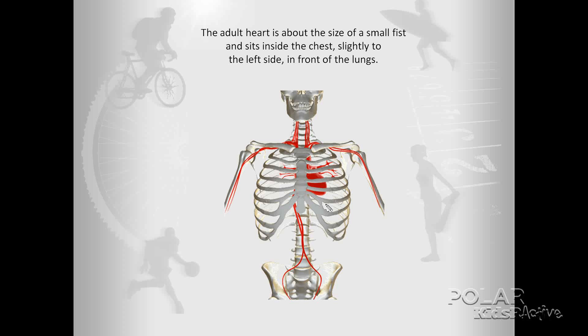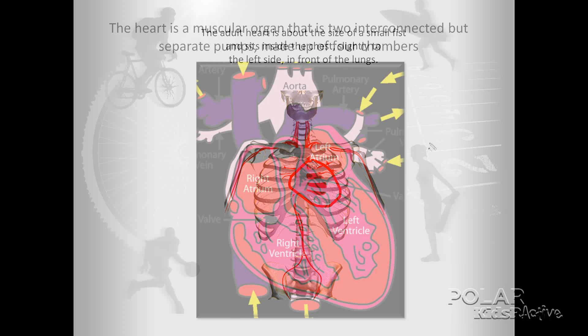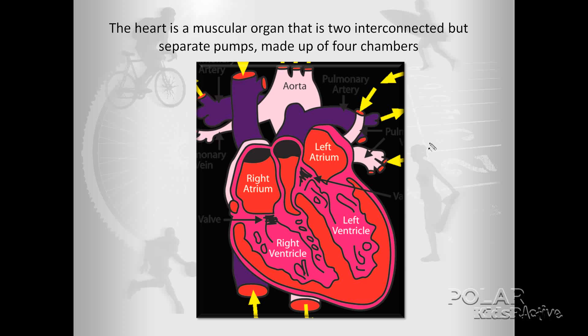The heart is a major organ of the cardiovascular system. The adult heart is about the size of a small fist and sits inside the chest, slightly to the left side, in front of the lungs. The heart is a muscular organ that is two interconnected but separate pumps made up of four chambers. The upper chambers are called the left and right atria, and the bottom chambers are called the left and right ventricles.